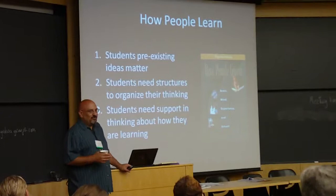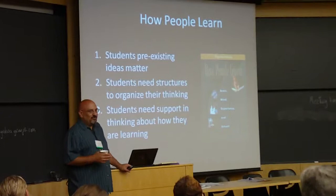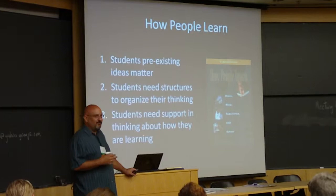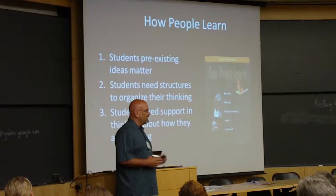And the third thing — something we often don't realize when we're teaching college level students — is 18-year-old kids are still learning how to learn. Part of our job is to help them engage with what we call metacognition, this idea of thinking about thinking. In other words, we're trying to help students realize when they've learned something and when they don't understand something. So these are the three big ideas of how people learn.